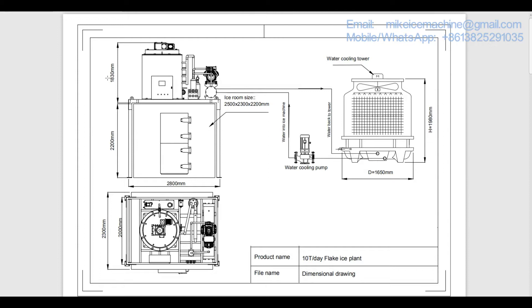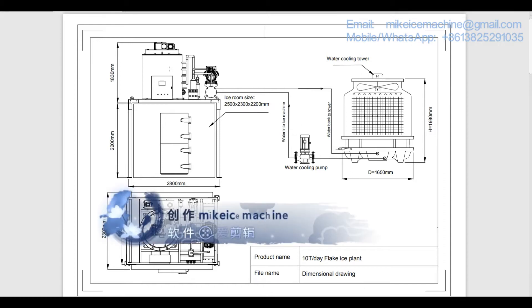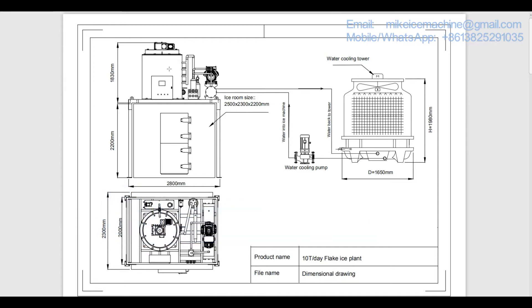This is the drawing to show my standard 10 ton per day flake ice plant. This is the 10 ton per day flake ice machine. This machine can make 10 tons of ice flakes within every 24 hours. That capacity of 10 ton per day is based on working with 30 degree Celsius ambient temperature and 20 degree Celsius water inlet temperature.